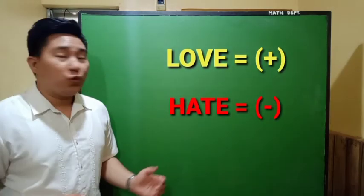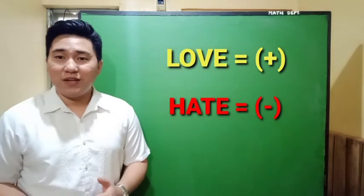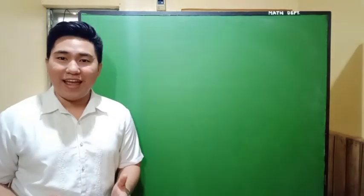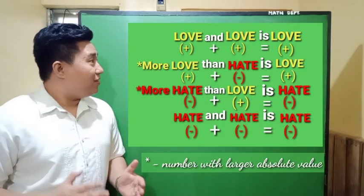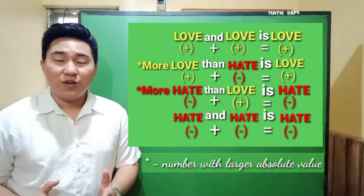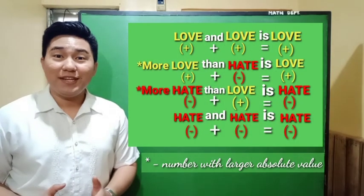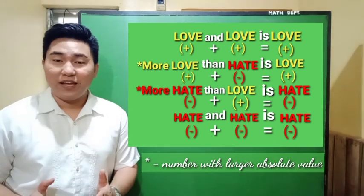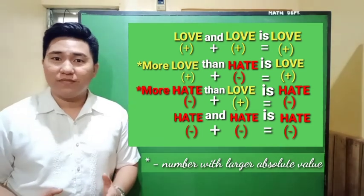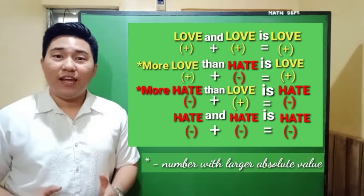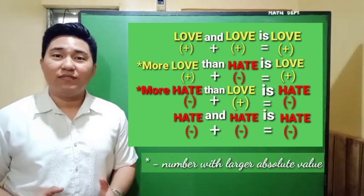To summarize the rules for adding signed numbers, let's consider the ideas of love and hate — love represents positive and hate represents negative. Love and love is love; more love than hate is still love; more hate than love is hate; and hate and hate is hate.